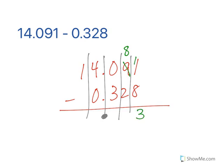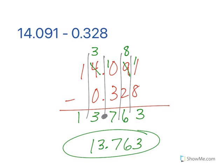11 minus 8 gives us 3. 8 minus 2 is 6. 0 minus 3, I need to borrow. Write it out. The less you try to do in your head, the more likely you are to not make a mistake. So 13 and 763 thousandths is the final answer.